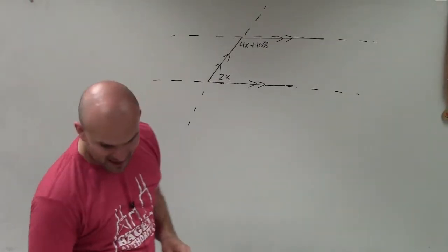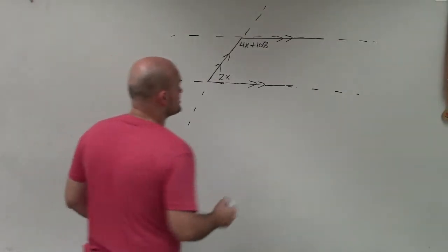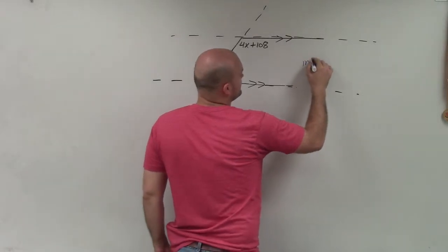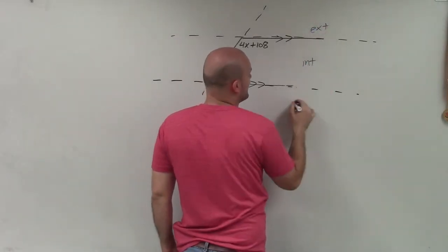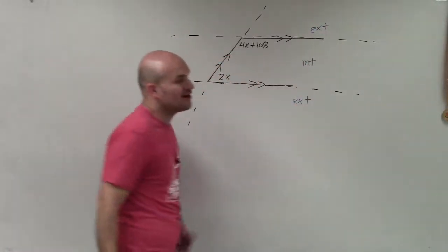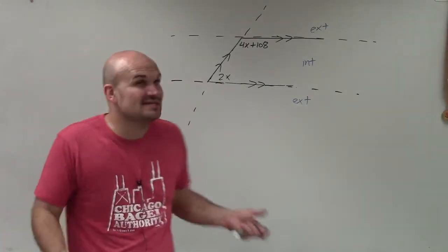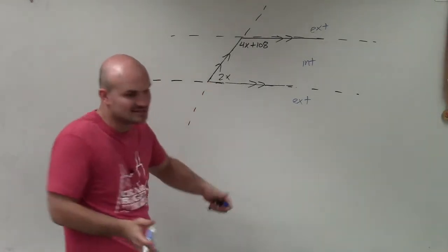So to identify my angle relationship, the first thing I want to do is determine, are these two angles interior or exterior? And just by writing them in there, hopefully you can obviously see that both these angles are interior, right? They're inside of the parallel lines.